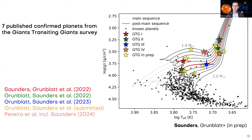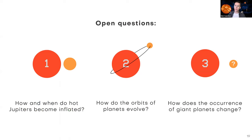So far the Giants Transiting Giants Survey has led to seven published confirmed exoplanets. Looking at the updated HR diagram, we're starting to really fill in some of the space that was very empty before, so there's a lot more interesting stuff to learn about the evolution of planetary systems now that we have a larger sample to compare to. The main questions we're focusing on are: how and when do hot Jupiters become inflated, how do the orbits of planets evolve, and how does the occurrence rate of giant planets change as a function of stellar evolution. Today I'll be focusing on the middle question — how do the orbits of planets evolve?